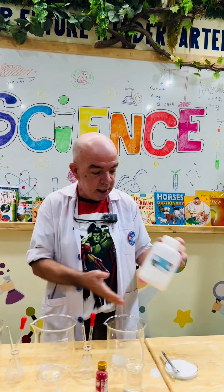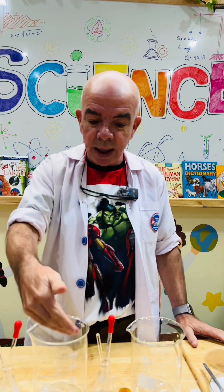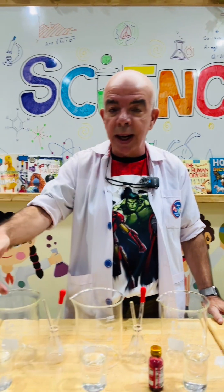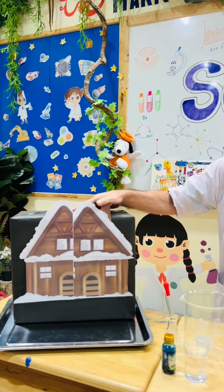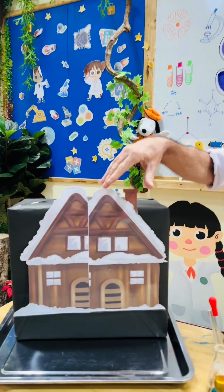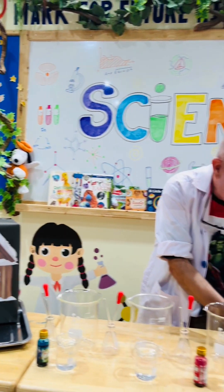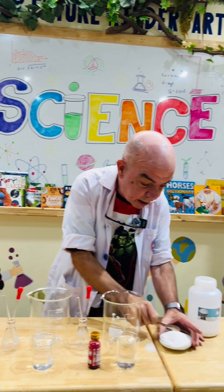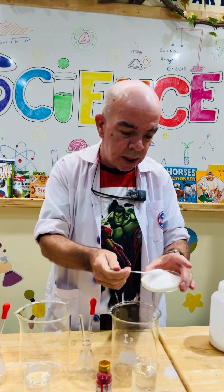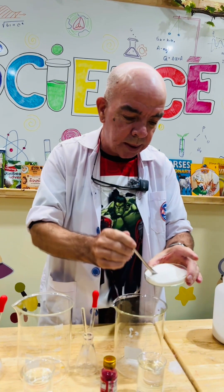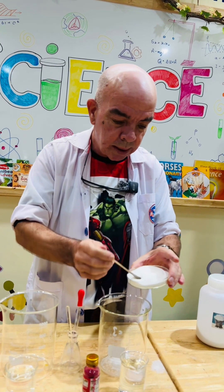So this is the instant snow, and we're just going to add food coloring and water to decorate these log cabins. This is the fake snow — we're going to put about five spoons in here: one, two, three...